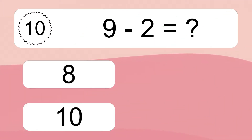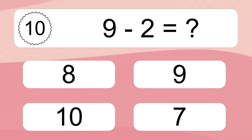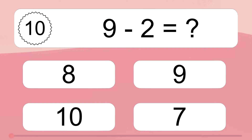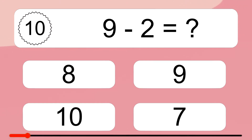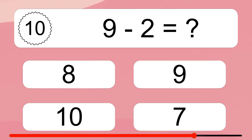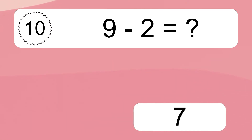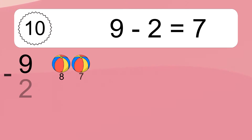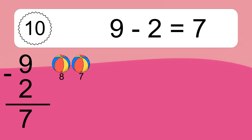9 minus 2 equals what? 9 minus 2 equals 7. Let's count it: 8, 7.